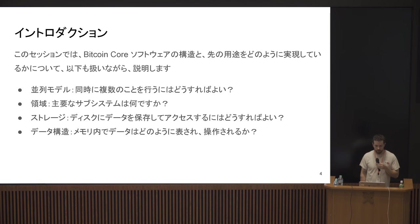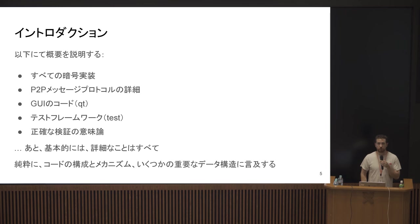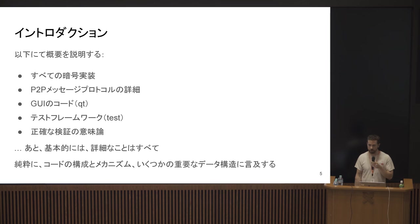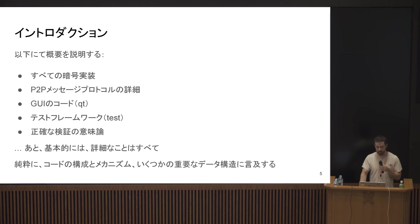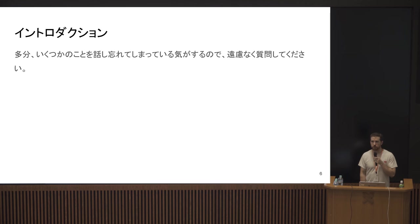In this talk, we're going to discuss the concurrency model — how do we do things simultaneously — the major subsystems in Bitcoin Core, how we store and access data on disk, and some of the major data structures. I'm going to gloss over a lot of stuff: cryptographic implementations, peer-to-peer message protocol, and graphical code. Marco is going to get into the test framework and deterministic builds after. I'm not going to talk about what defines validity in Bitcoin. This is just about some of the concepts in the code — hopefully a blueprint for you to go out and poke around.